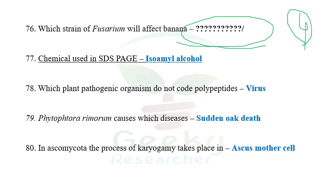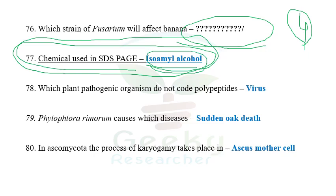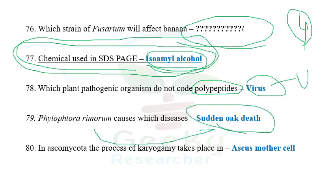The next question: chemical used in SDS-PAGE — possibly isoamyl alcohol; I'm not sure. If you know, comment below. The next question: which plant pathogen organism does not code any polypeptides? Among the options — fungi, bacteria, virus — the virus group called Umbravirus does not code any coat protein or polypeptides. It is also called carrot mottle virus. The next question: Phytophthora ramorum causes sudden oak death.